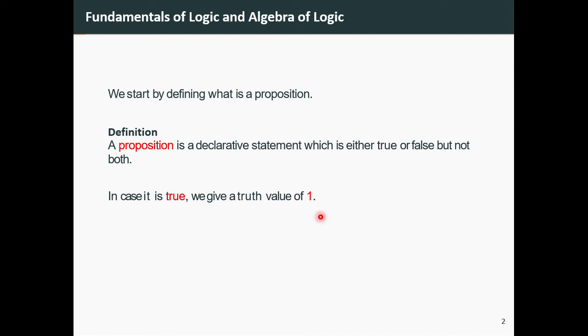In case it is false, we give a truth value of zero. In other books, they use the symbol F.